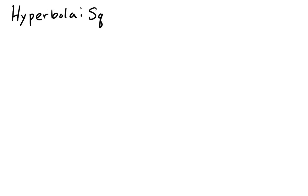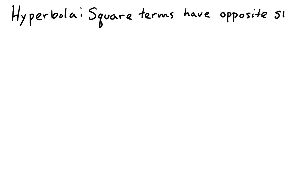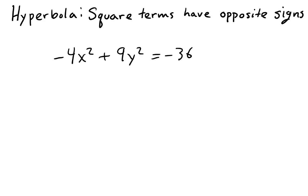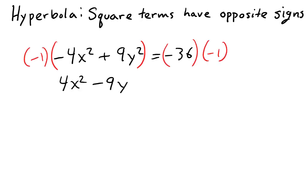In the equation of a hyperbola, the square terms have opposite signs. You can multiply the equation on both sides by negative 1, but the signs remain opposite of one another.